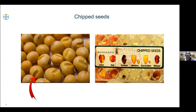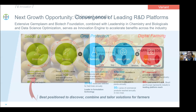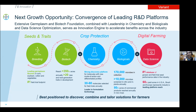With chip seeds, we do analysis on individual seeds in the breeding program, and only if the seed has the markers we're interested in do we go ahead and plant them. You can see how we have gradually increased our use of different technologies to aid breeding.